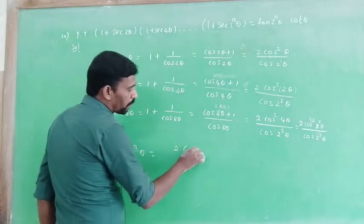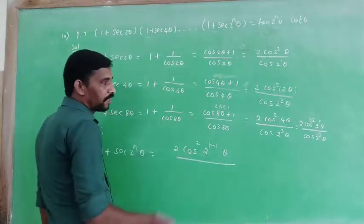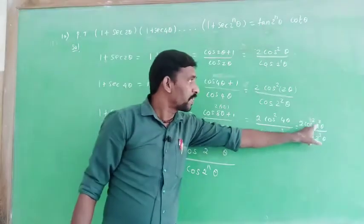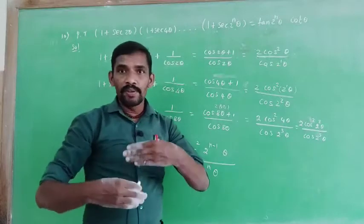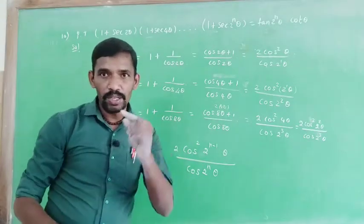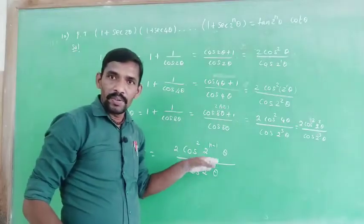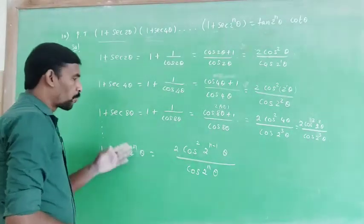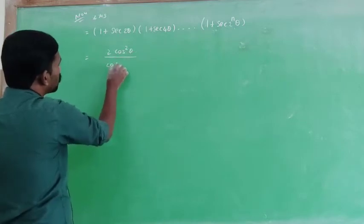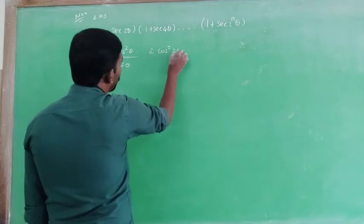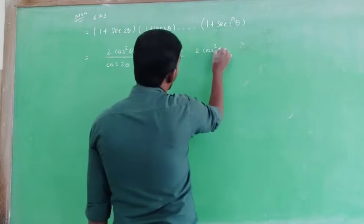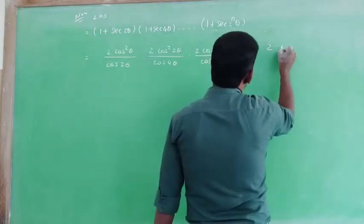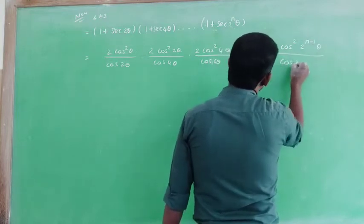The general term becomes 2·cos²(2^(n−1) θ) divided by cos(2^n θ). So we have: 2·cos²(2θ)/cos(2θ), then 2·cos²(4θ)/cos(8θ), and so on up to 2·cos²(2^(n−1) θ) divided by cos(2^n θ).